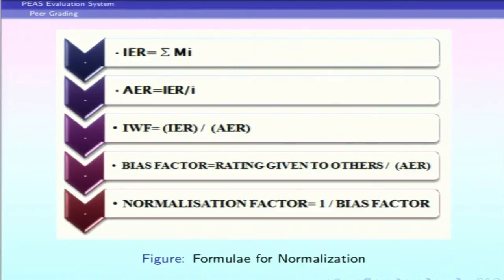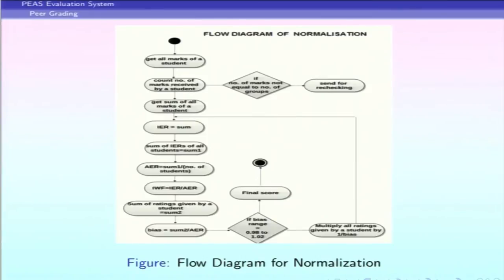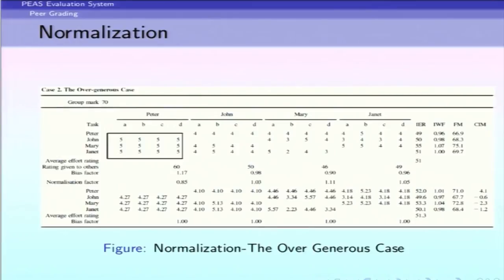We then calculate the Individual Rating Factor (IRF), which is your IER divided by AER. From this we derive the bias factor — how biased you are when giving ratings, computed as your rating to others divided by AER. The normalization factor is the inverse of the bias factor. For example, in Peter's case: IER was 49, AER was 51, and he gave others a rating of 60 — an over-generous case. His bias factor came to 1.17, giving a normalization factor of 0.85.